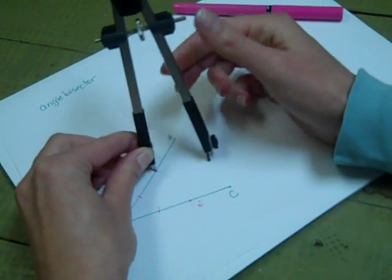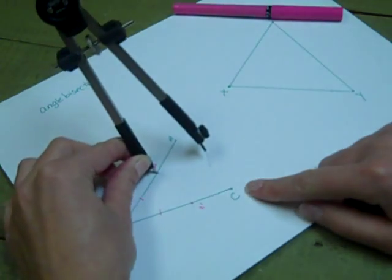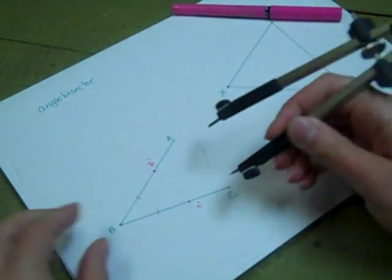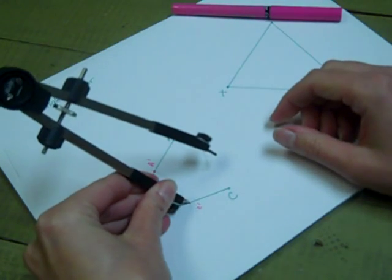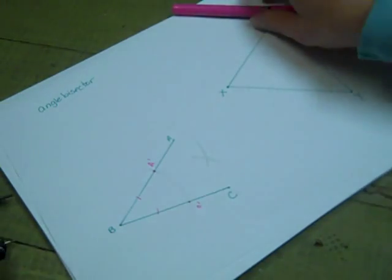I'm now going to put my pointer on A' and I'm going to make an arc in the middle of my angle. I will then put my pointer on C' and make an arc in the middle of my angle.